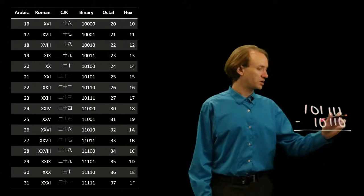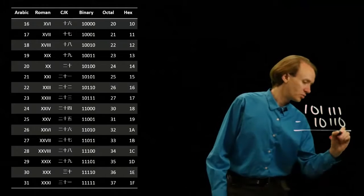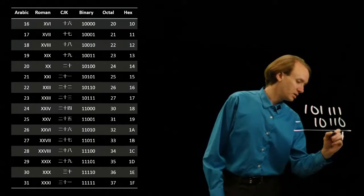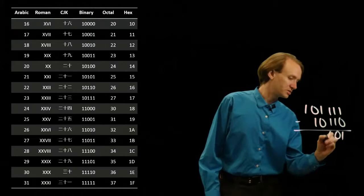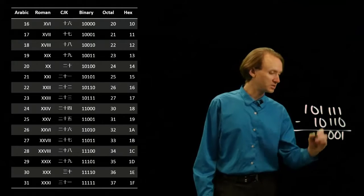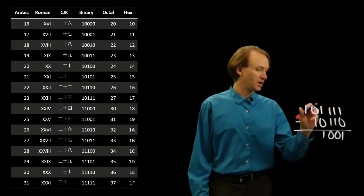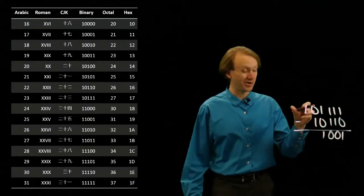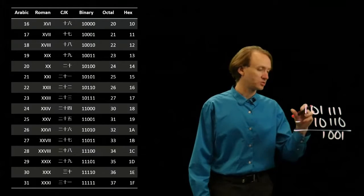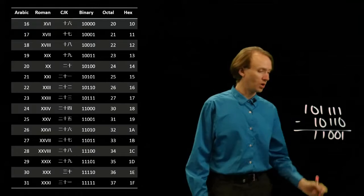So now if I do this subtraction, 0 minus 1 is 1, 1 minus 1 is 0, 1 minus 0 is 1, and now I have 0 minus 1, so I'll borrow 1 from this position. So I have 10 minus 1, which leaves me with 1.